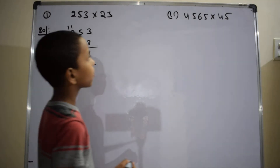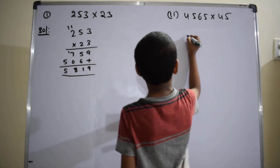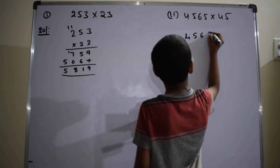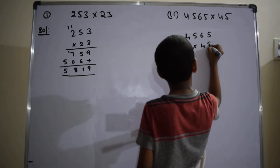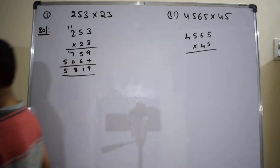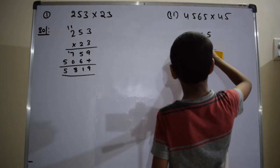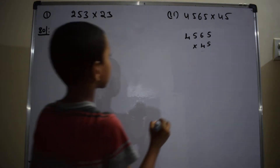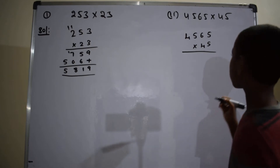The second problem is 4565 into 45. Solution: 4565 into 45. 5 into 5 equals 25.